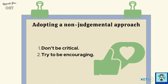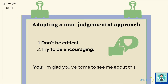The third indicator is adopting a non-judgmental approach. You have to avoid being critical and instead be encouraging. So in the previous example, don't say 'It's stupid — you have to take your son out of school. It's not being very responsible if you don't.' That's being critical. Instead, try and encourage them: 'I'm glad you've come to see me about this, and let's see how we can work together to help you find a solution to keep your son out of school until he's feeling better.'